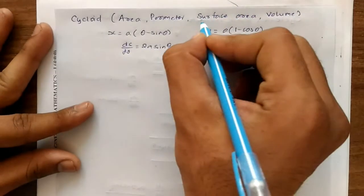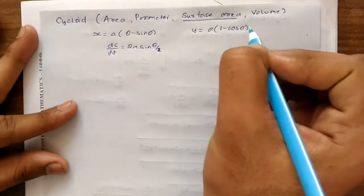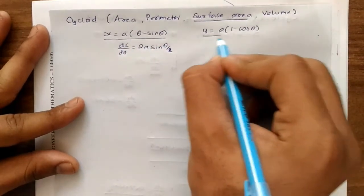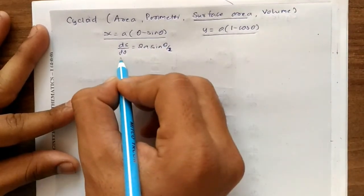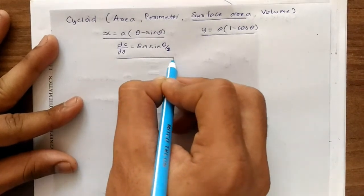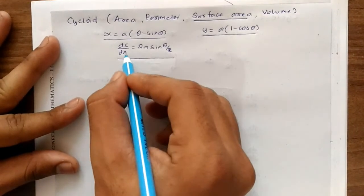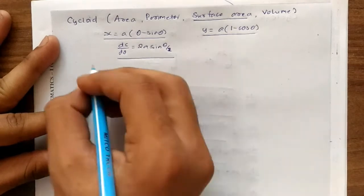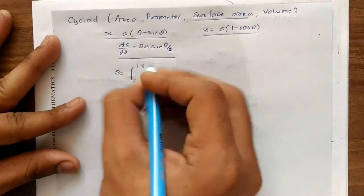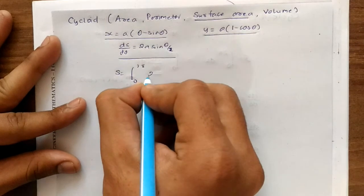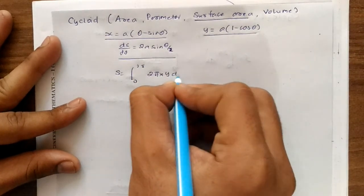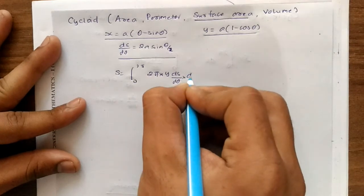Now let us find the surface area of a cycloid. We know that x is equal to a(θ − sinθ), y is equal to a(1 − cosθ). From the previous work while finding the perimeter length, we have found the value of ds/dθ. So the formula for surface area is equal to the integral from 0 to 2π of 2πy (ds/dθ) dθ.